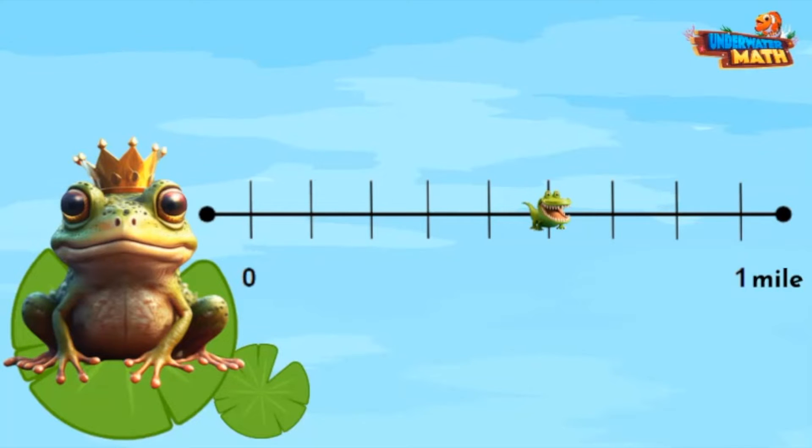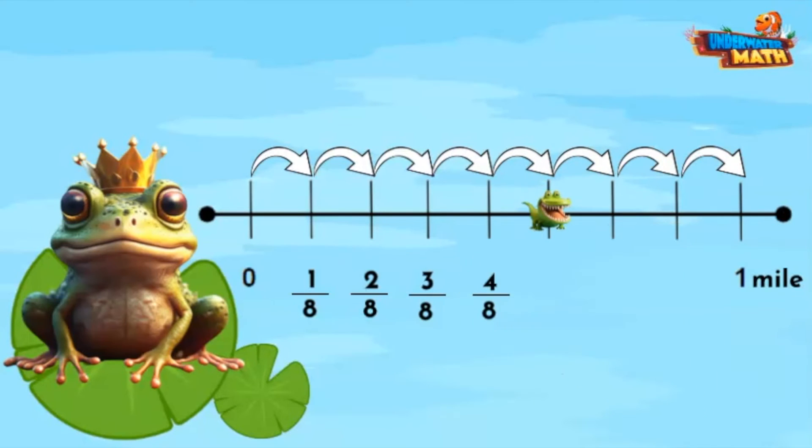Let's figure out what fraction is represented by Allie's location. This number line is divided into one, two, three, four, five, six, seven, and eight equal parts. Let's label the blank hash marks. One eighth, two eighths, three eighths, four eighths, five eighths, six eighths, and seven eighths. It looks like Allie had to walk five eighths mile to get to the pond today.